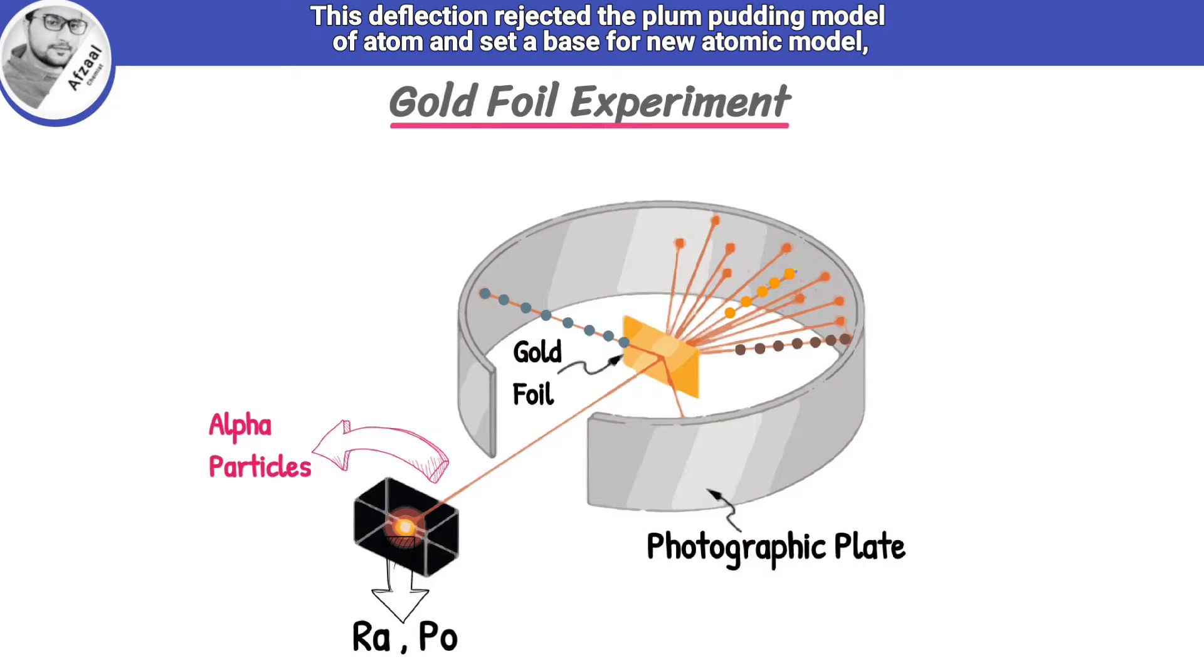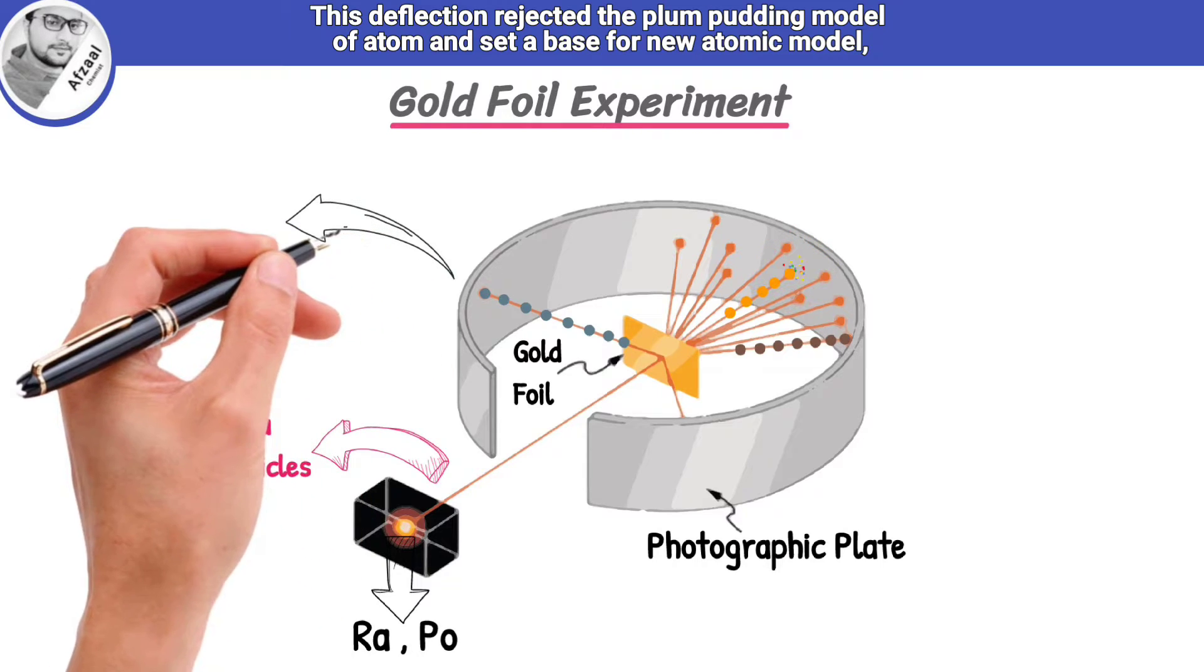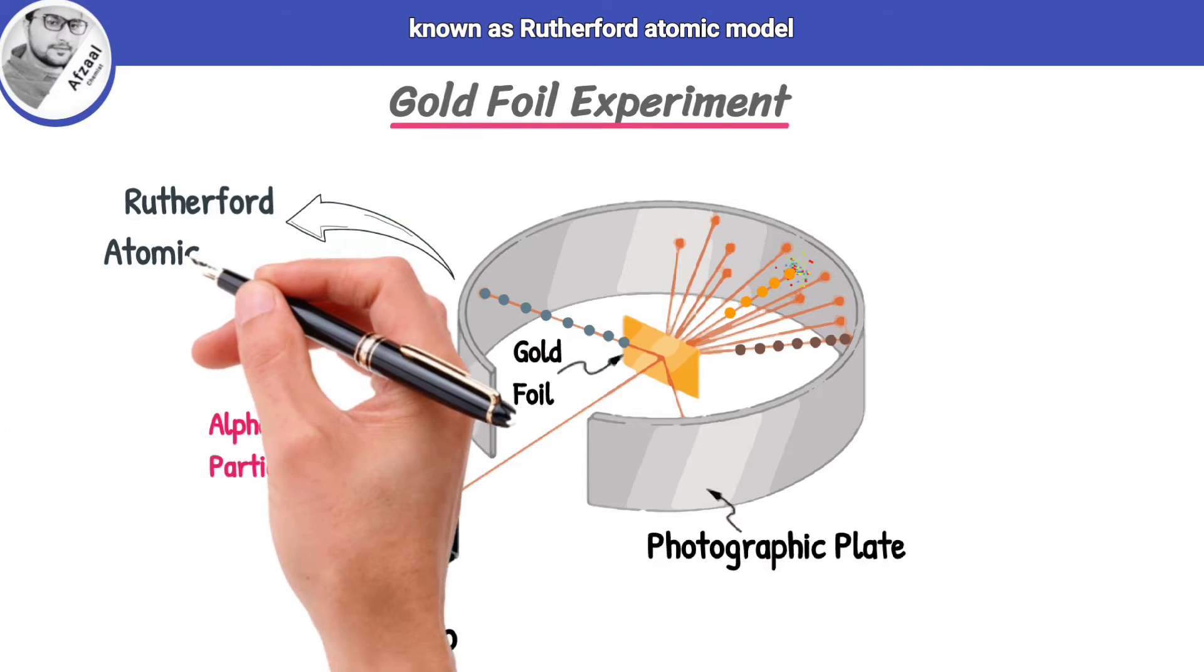This deflection rejected the plum pudding model of atom, and set a base for new atomic model, known as Rutherford Atomic Model.